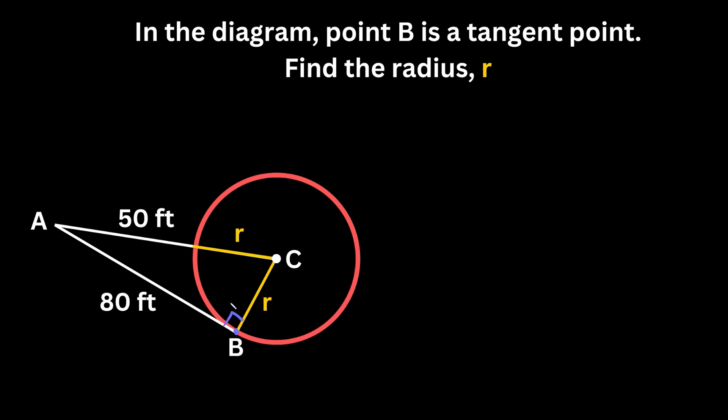Now how does that help us? We have this triangle ABC. At least now we know we have a right triangle. So how do you find missing lengths of right triangles?